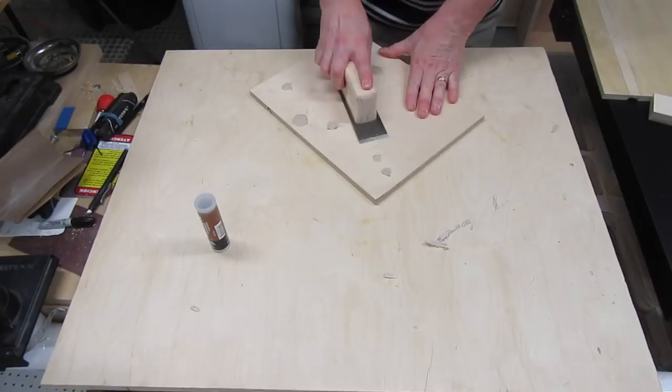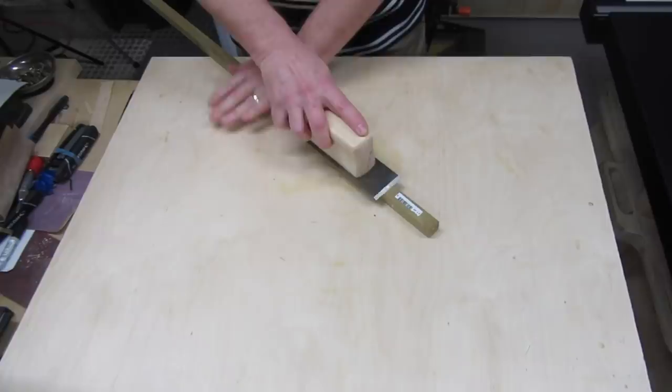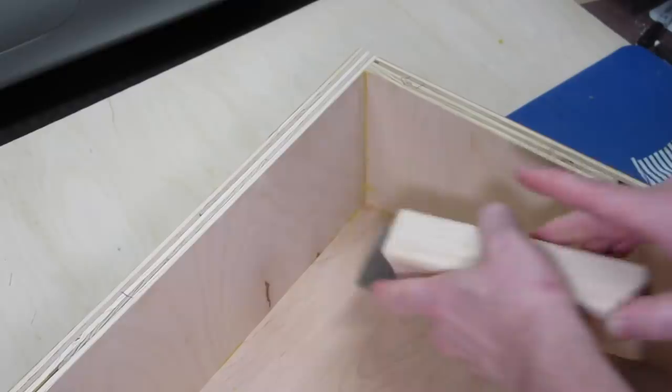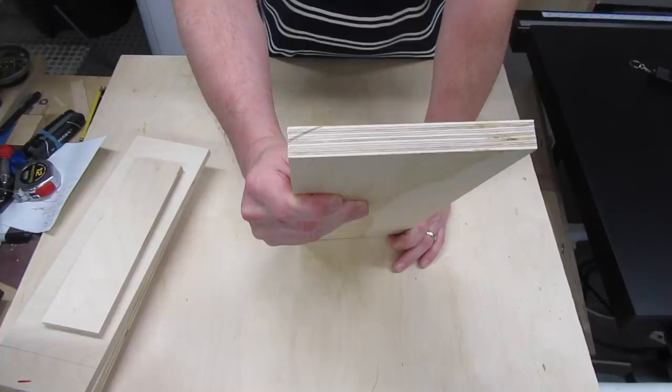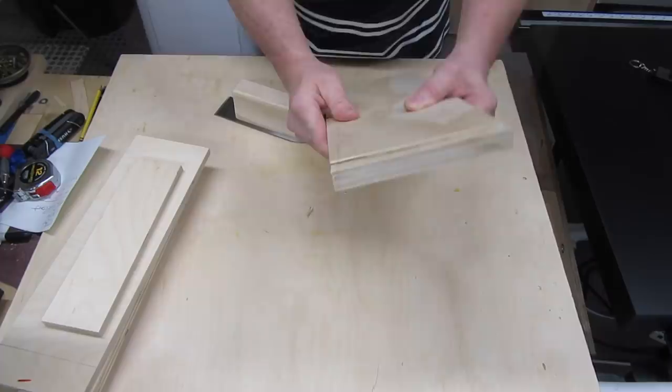Again, you could do this with a chisel, but it's hard to keep it flat. It's easy with a chisel plane. You can also use it like a card scraper by using the back of the blade. I keep finding new uses for it, and I find myself reaching for it more and more often.